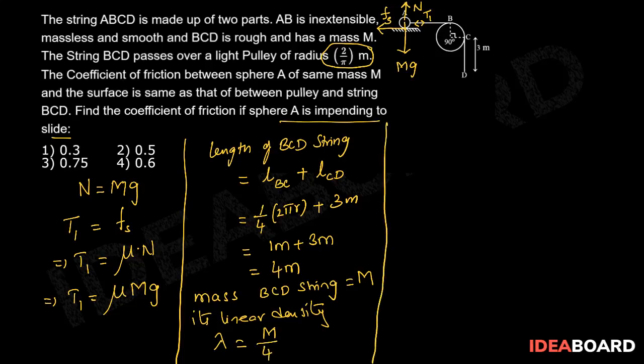Now mass of CD string is equal to 3M upon 4. Now tension at point C will be equal to the weight of mass of CD string since the system is in equilibrium.